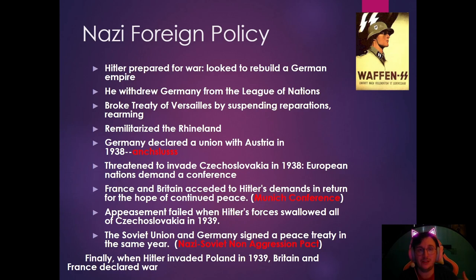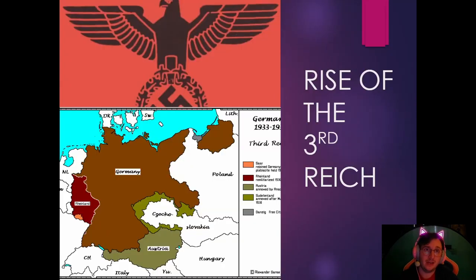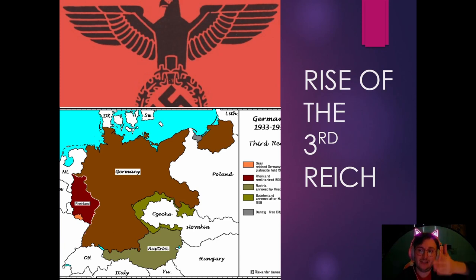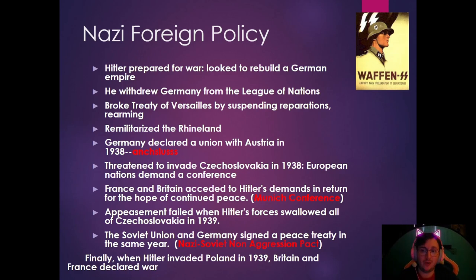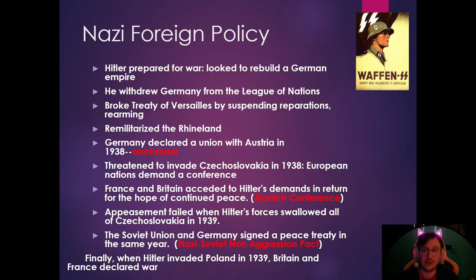He re-militarized the Rhineland — the area in red bordering France and Germany — which was supposed to be demilitarized. France said no but didn't want war, so they left it alone. Germany also declared a union with Austria in 1938, called the Anschluss, which was the joining of Austria and Germany.